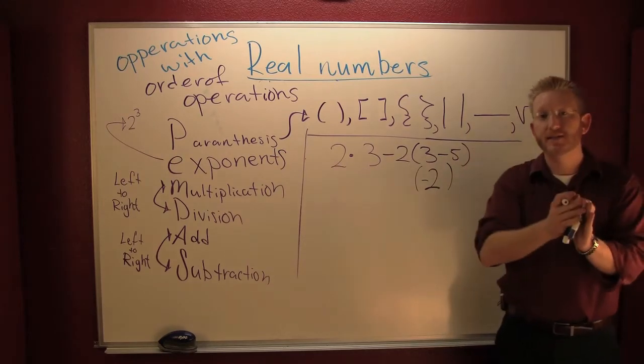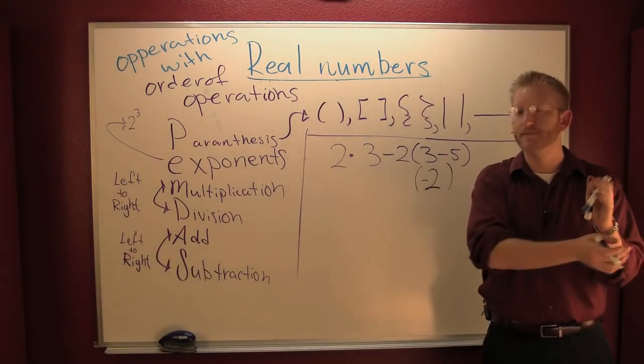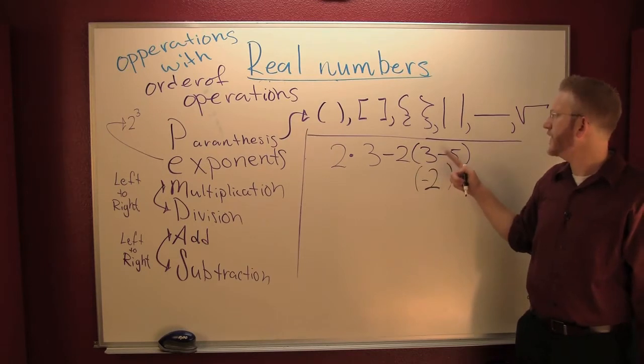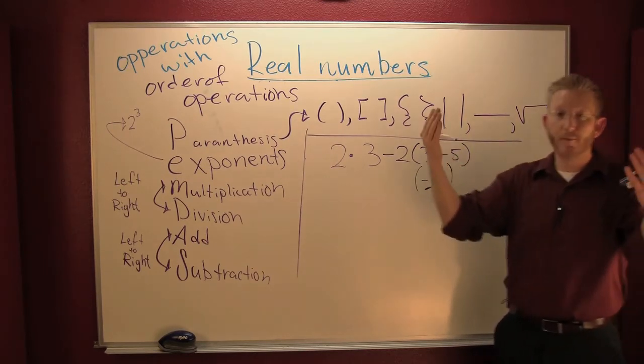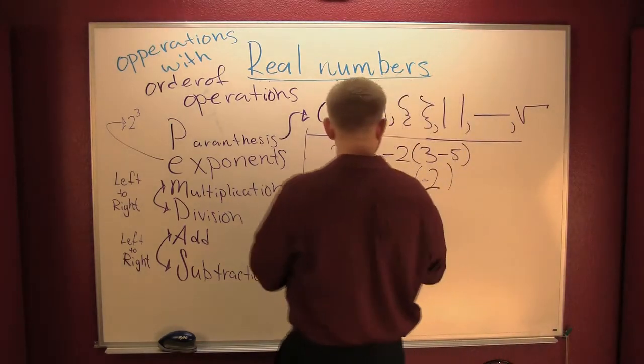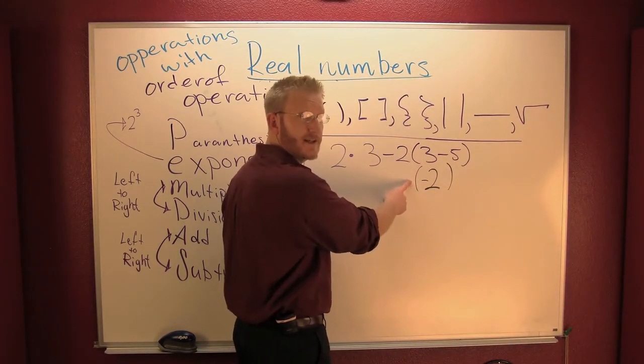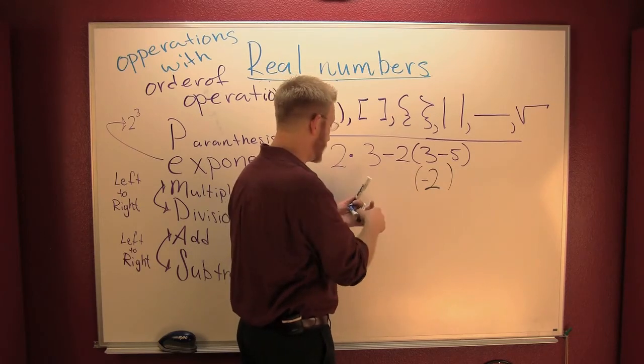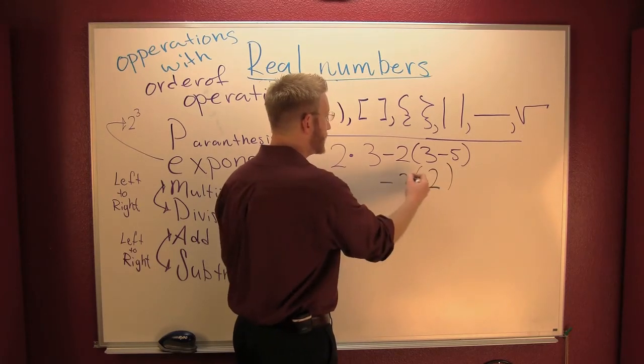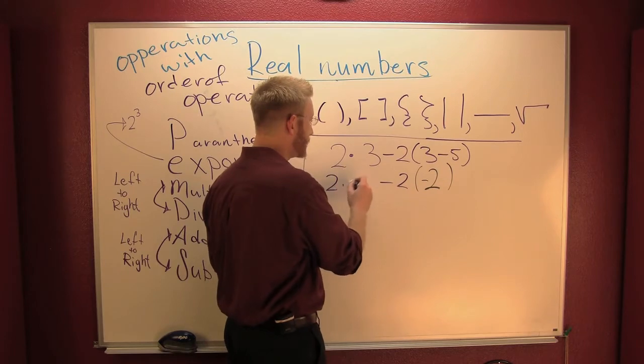We work inside out, left to right. And five minus three is two. Now I'm going to recopy everything. What was my operation out here? It was multiplication. What's it going to be down here? Multiplication. So then this is a minus two, and then I still have two times three.